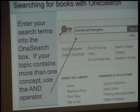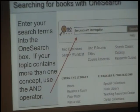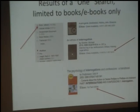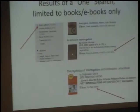Let's use OneSearch for searching for books. My topic is terrorists and interrogation. I do not want to see all books on terrorists, but only books that have to do with the interrogation of terrorists. So I have separated my two search concepts with the AND operator. Among the results I find are a printed book and an electronic book — An Ethics of Interrogation and The Psychology of Interrogations and Confessions.